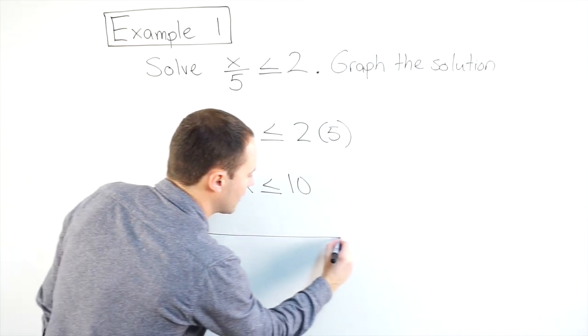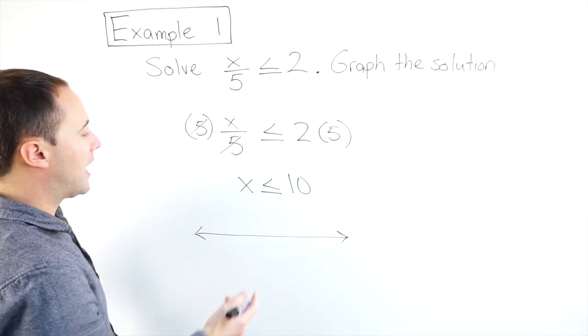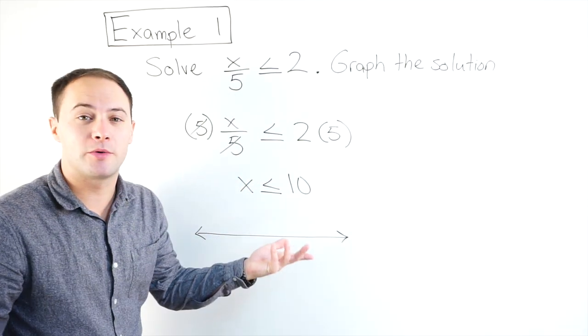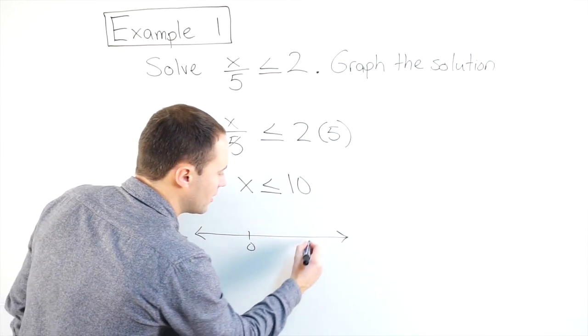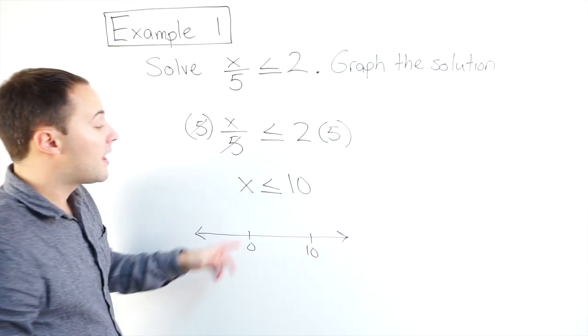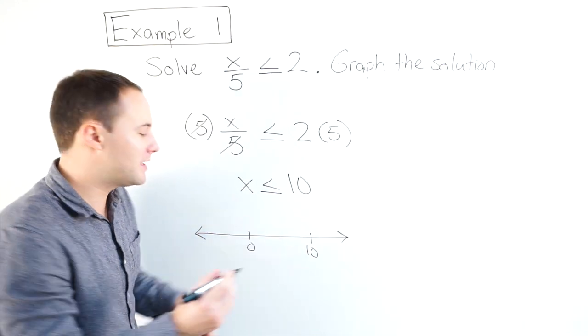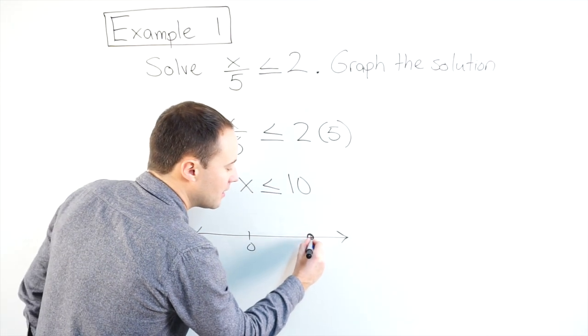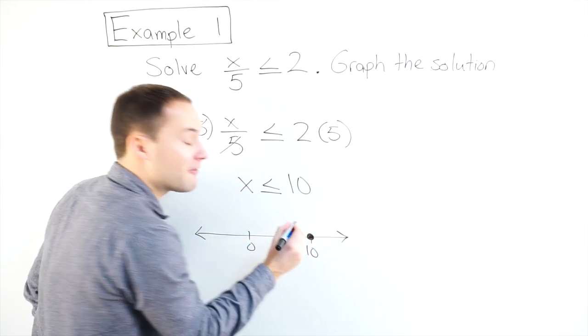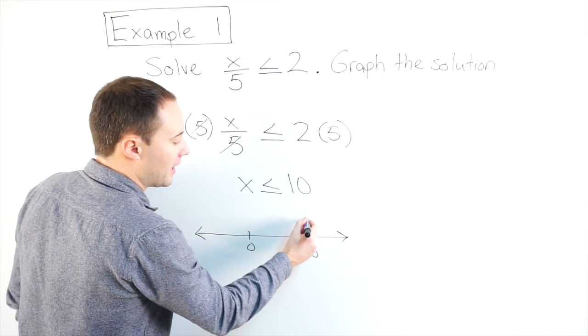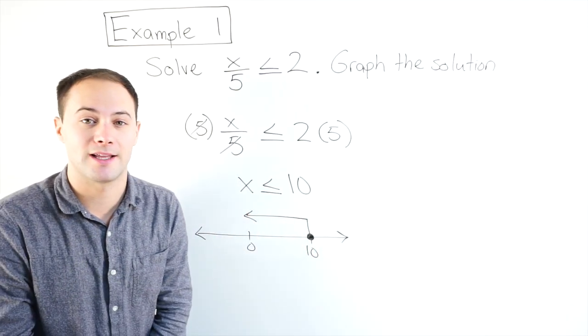Here is my quick number line. I know x needs to be less than or equal to 10, so maybe here's 0, there is 10. Less than or equal to, because it's or equal to, that means my dot needs to be filled in, arrow going towards the less than.